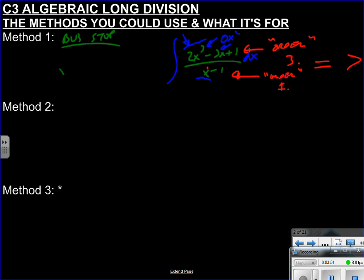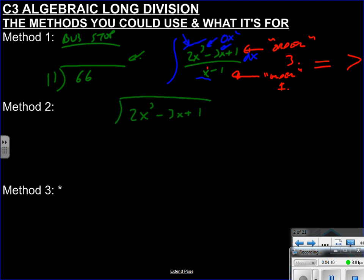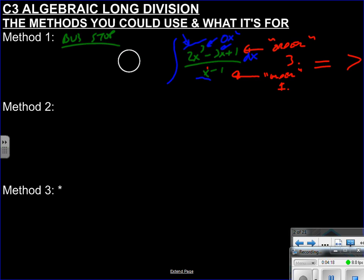The bus stop method looks like the layout you'd use in primary school for something like 66 ÷ 11 — it's called that because the notation looks like a bus stop. So if I wanted to divide 2x³ - 3x + 1 by (x - 1), I'd write x - 1 on the outside. But we're not going to use that method here.